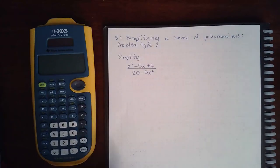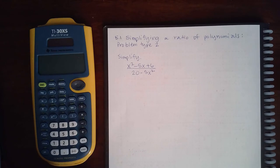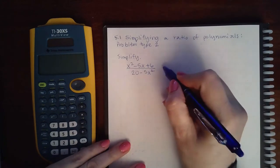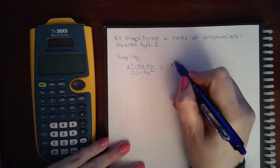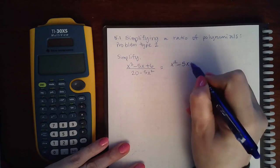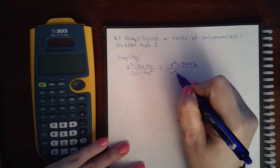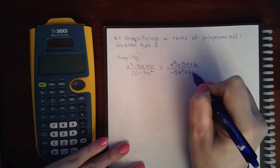Here we have 5.1 simplifying a ratio of polynomials, problem type 2. I will first make sure that my terms are written in the correct order: negative x squared and positive 20.